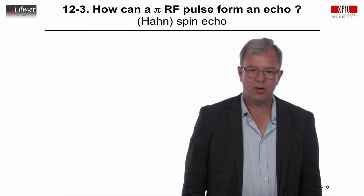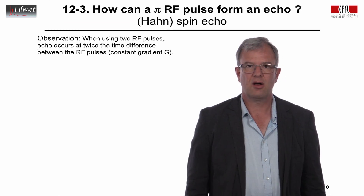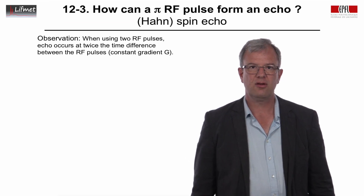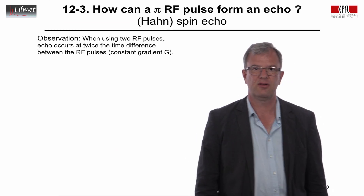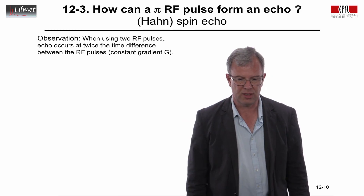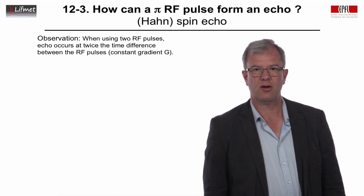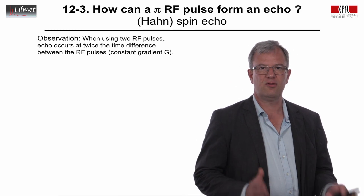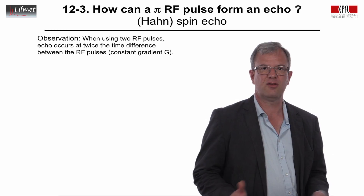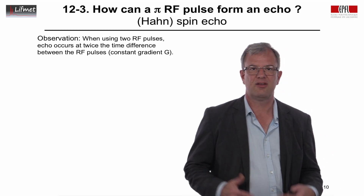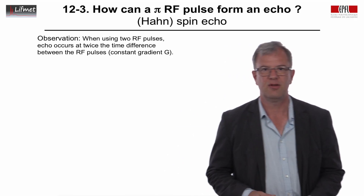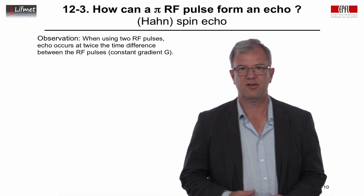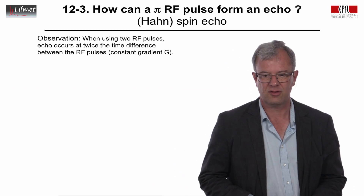Spin echo is actually a consequence of using two RF pulses. Erwin Hahn observed this in the early 1950s: when using two RF pulses, there is an echo observed at twice the time difference, and this happens in the presence of a constant gradient.